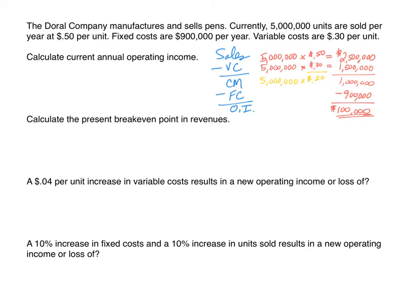The next question asks us to calculate the present break-even point in revenues. The formula is fixed costs divided by the contribution margin ratio, where contribution margin ratio equals contribution margin divided by sales. Fixed costs are $900,000, and we have a couple of ways to work with the contribution margin ratio.